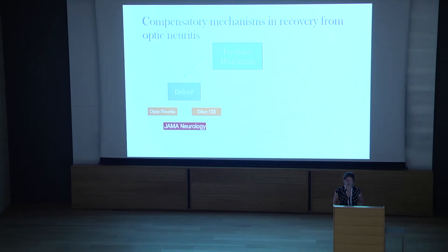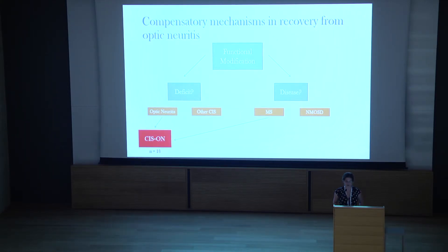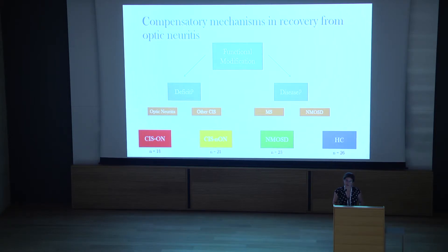In our first project we looked only at the neurological deficit, comparing optic neuritis to patients with other clinically isolated episodes. In this study we expanded our scope, comparing two inflammatory diseases of the CNS — MS and NMOSD. We have four groups all collected at the Charité University in Berlin: optic neuritis with a background of multiple sclerosis, multiple sclerosis with other episodes of sensory and motor type, NMOSD with optic neuritis, and a group of healthy control subjects.